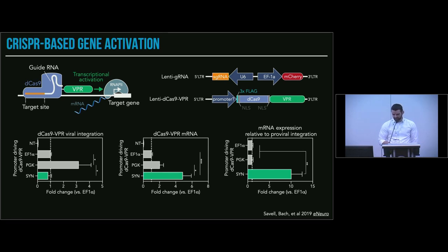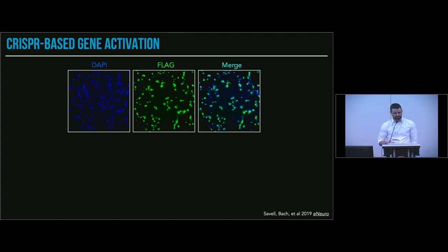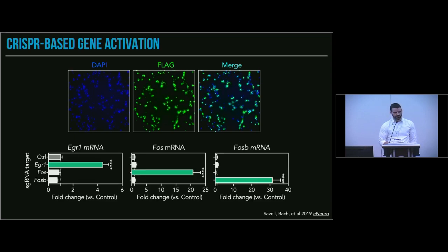We think this is why this is more effective compared to these other two promoters. We decided to move forward with this. This produces really robust expression. There's a flag tag on the dCas-VPR transgene, so we can use this for immunocytochemistry, showing very robust expression. We can target a number of different genes of interest. We're interested in activity-responsive genes in the genome: EGR1, FOS, and FOSB. You can see here that changing the sgRNA target changes which of the genes are induced by this approach. EGR1 mRNA goes up only when we target EGR1. FOS goes up only when we target FOS. FOSB goes up only when we target the FOSB promoter.